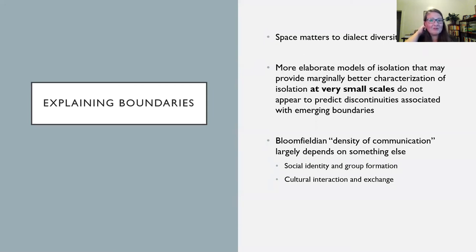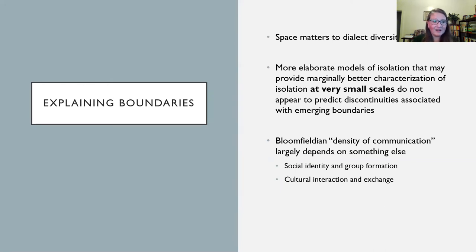To sum up the Sierra Miwok findings: space does matter to dialect diversity here, but the more elaborate model of isolation provides only a marginally better characterization of isolation and only at a very small scale. Further work suggested that maybe there's not a language boundary between Northern and Central Sierra Miwok at all. Small-scale dialect diversity is predicted by these isolation models, but they're not helping us understand where boundaries emerge. This Bloomfieldian idea of density of communication seems to depend on something else — once you get to a scale larger than the shallowest dialect diversity, it seems to depend on social identity, group formation, or cultural interaction and exchange that fall outside the physical landscape.